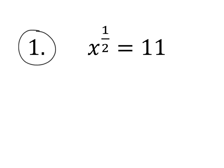On this problem, x is raised to the exponent of one half. So for us to get x by itself, we need to raise both sides of this equation to the reciprocal of one half. Well, the reciprocal of one half is two over one, and two over one is the same as two. So in other words, we need to square both sides.